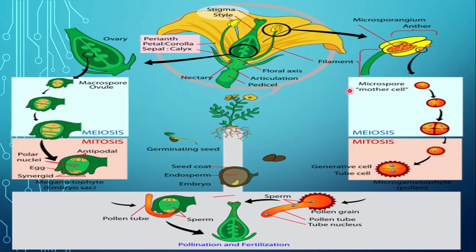First is the spore producing generation and second is the gamete producing generation. Milte hain next lecture mein, next topic ke saath, jis mein hum seeds ka structure, uski germination aur development ko study karenge. Thank you.